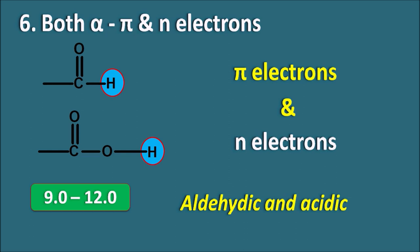In summary, the NMR spectral table spanning 0 to 12 ppm can be divided into six divisions based on the proton's environment: no pi electrons (0–1.5), alpha pi electrons (1.5–2.5), alpha N electrons (2.5–4.5), directly attached pi electrons (4.5–6.5), aromatic pi electrons (6.5–8.0), and both pi and N electrons (9–12). This framework allows us to easily remember the approximate chemical shift values of different proton types.